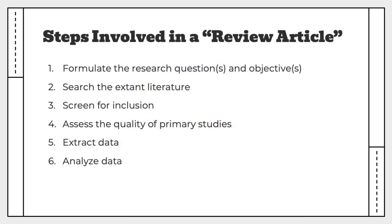The steps involved in conducting a review article are pretty straightforward. They start out by formulating research questions and objectives. From there, a search is conducted to find existing literature, and depending on the topic and the type of review, this can result in hundreds or even thousands of potential candidate articles. Next, the articles are screened based on some predetermined inclusion and exclusion criteria to assess quality and select the most relevant ones. The remaining articles are read closely to extract data of interest, and finally, the extracted data is analyzed for patterns or trends.